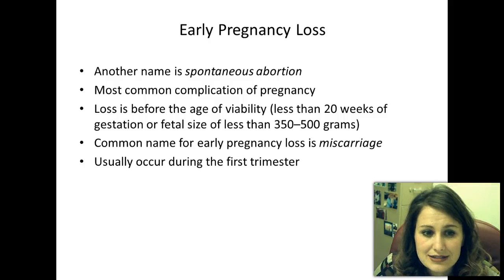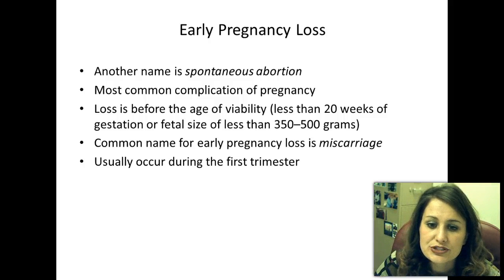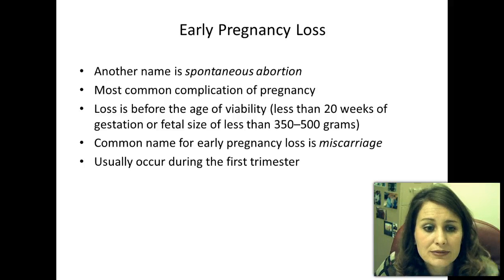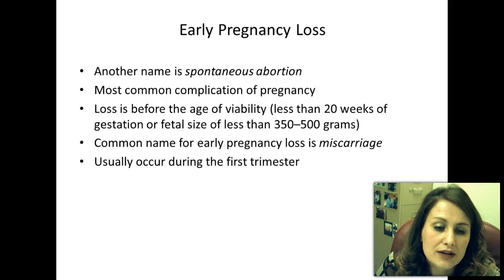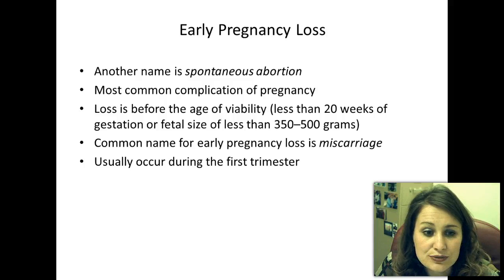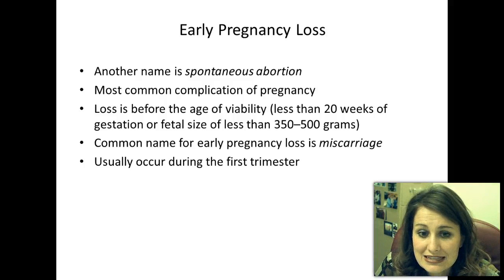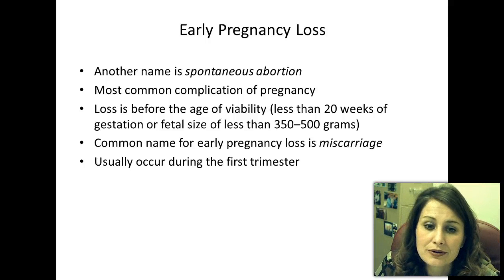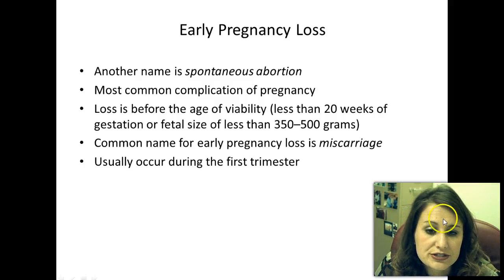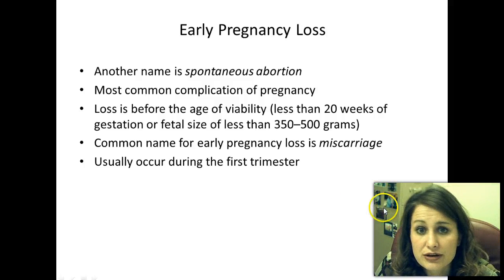Early pregnancy loss—another name is spontaneous abortion or miscarriage—is the most common complication of pregnancy. Loss occurs before the age of viability, which is less than 20 weeks of gestation, or if the baby is less than 350 to 500 grams (less than one pound). It usually occurs during the first trimester.